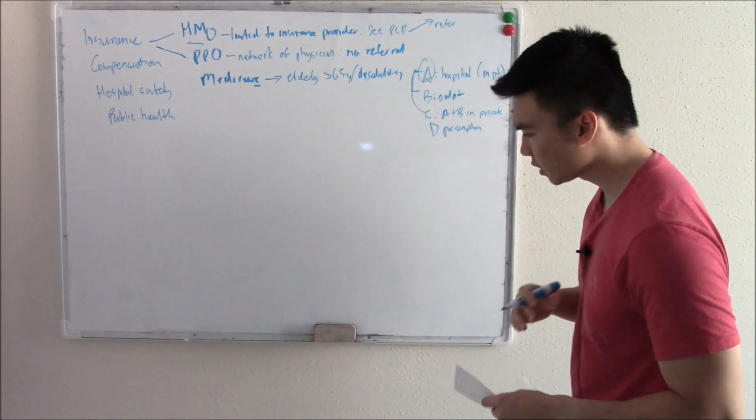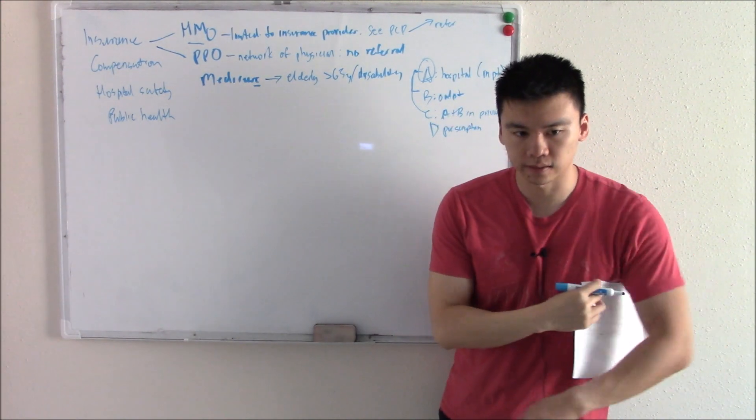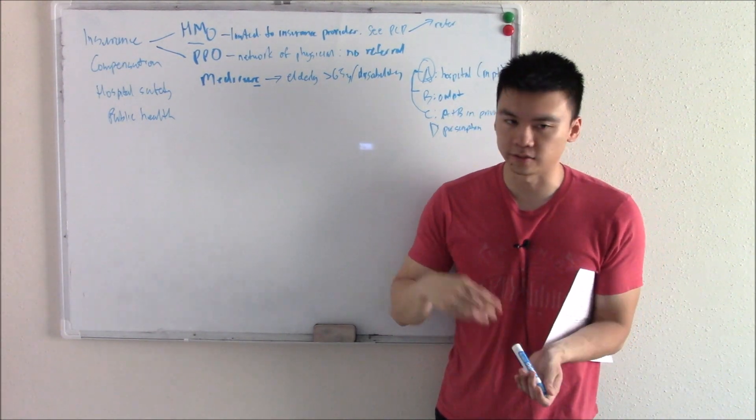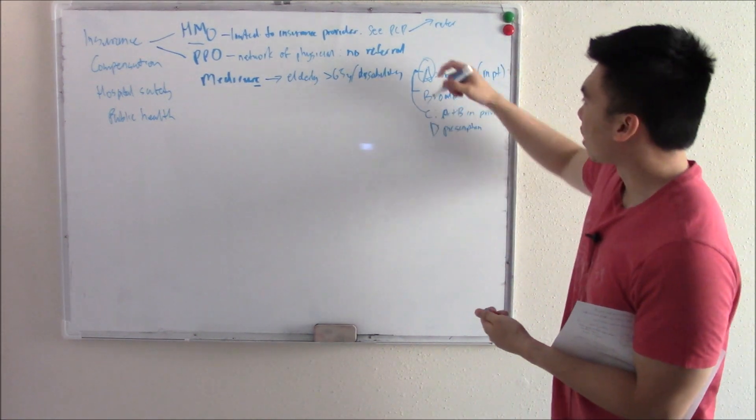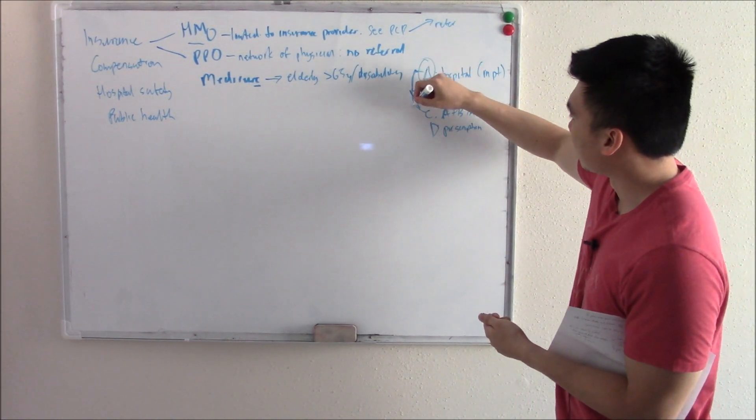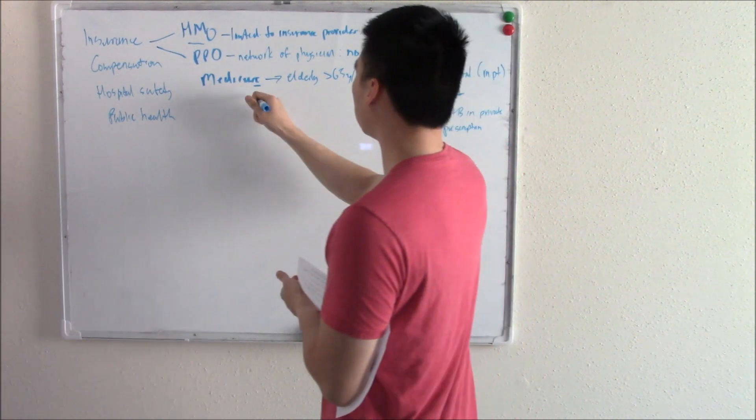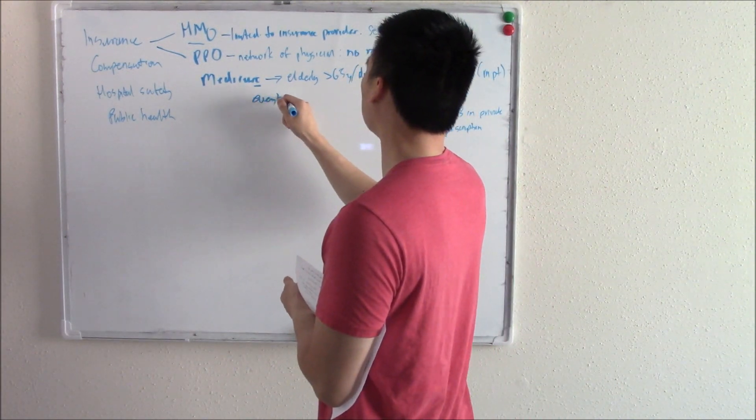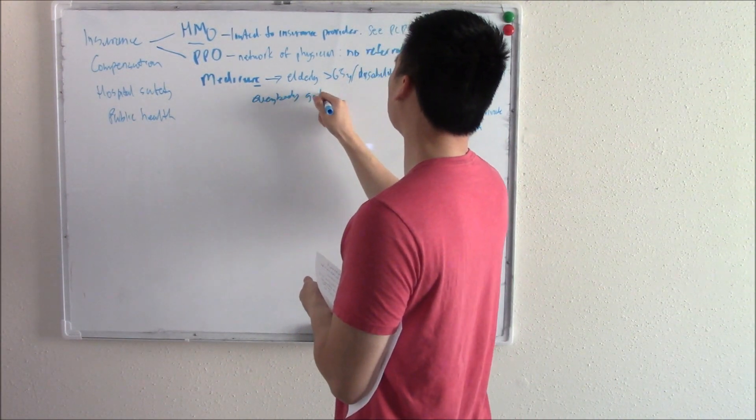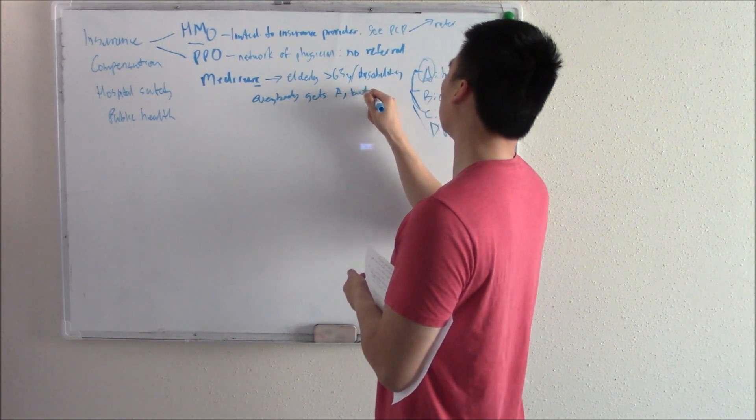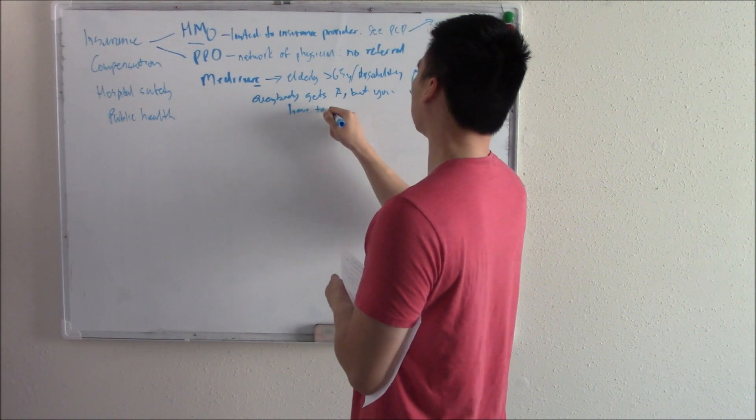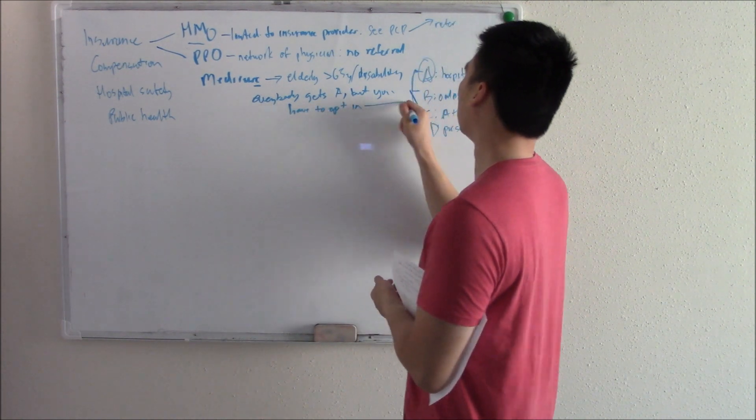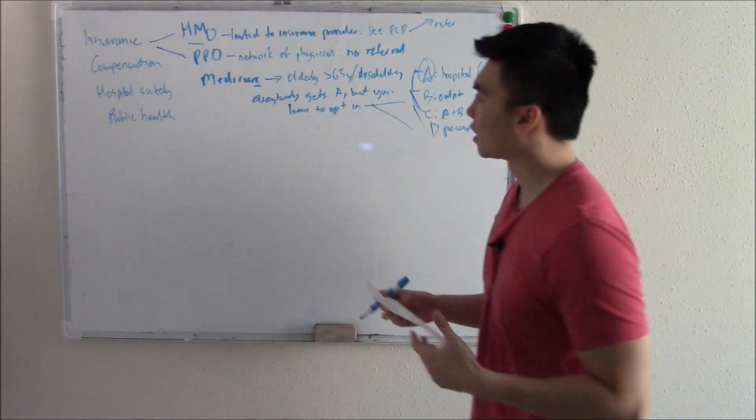Everybody gets A. Just in emergency cases, if something happens in emergency cases, you rush to the hospital, you're covered. But you have to opt in for B and D. So I'll write everybody gets A. Everybody gets A. But you have to opt in for the rest of them. So that's Medicare.